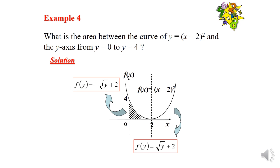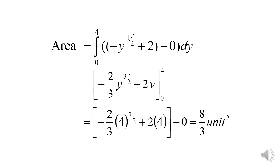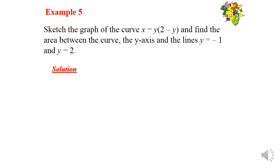Example 4: Find the area between the curve y = (x minus 2)² and the y-axis from y = 0 to y = 4. For the right side, f(y) = square root of y plus 2, and for the left side, f(y) = negative square root of y plus 2. The area equals the integration of (negative square root of y plus 2 minus 0) dy from 0 to 4, giving negative (2/3)y^(3/2) plus 2y from 0 to 4, with the answer 8/3 square units.